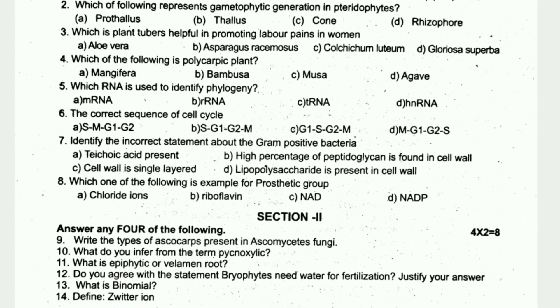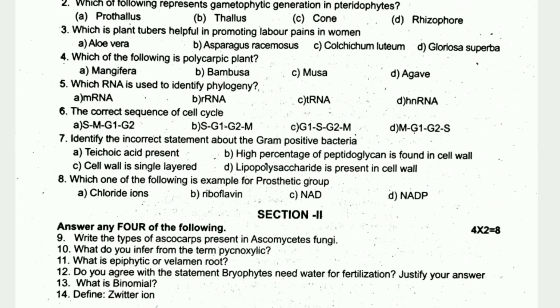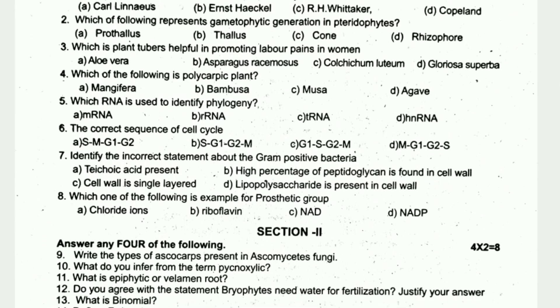Sample MCQ questions: The 5 kingdom classification was proposed by... Which of the following is a polycarpic plant? What is the correct sequence of the cell cycle? Which one of the following is an example for a prostatic group?